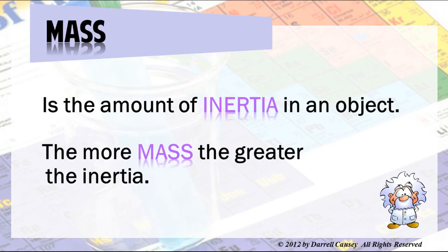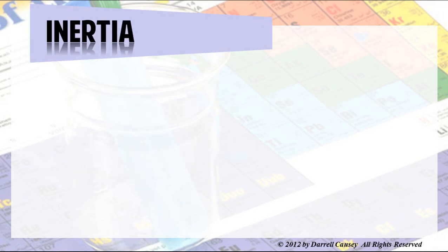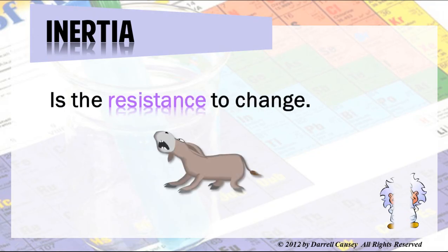Think of it like this: it would be very hard for me to move a large 18-wheeler truck. However, I could pretty easily move a small Volkswagen. The small Volkswagen has less mass than the 18-wheeler because it has less inertia — less resistance. Inertia is the resistance to change, and the more resistance there is, the more inertia. The whole reason something has more inertia is because it has more mass. Mass and inertia have a relationship.